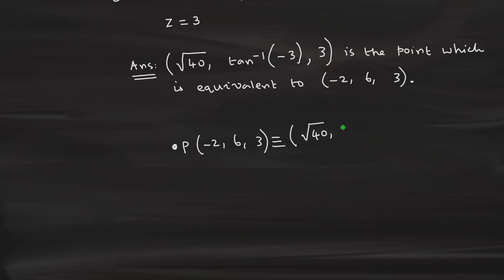And therefore, we get a square root of 40. And then we have this tan inverse of minus 3 comma 3. Point doesn't change. This point doesn't change. It is staying there only. What is changing is minus 2 is changed to root 40. 6 has been changed to tan inverse of minus 3. And 3 is only in the case of special case of cylindrical system. 3 remains as 3. But in other coordinate system, it will change.